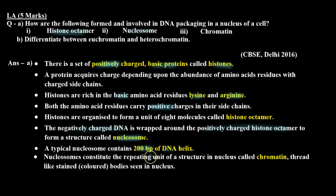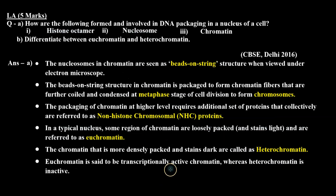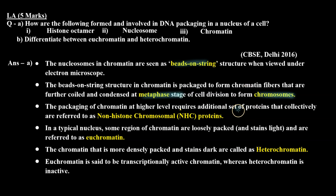When DNA coils on the nucleosome, it forms chromatin fibers. On chromatin, the nucleosomes appear like beads on a string — like pearls on a thread. After this, the chromatin fiber forms a chromosome during the metaphase stage of cell division. This is how DNA gets packed inside the nucleus. For higher-level packaging, non-histone chromosomal proteins are also involved.